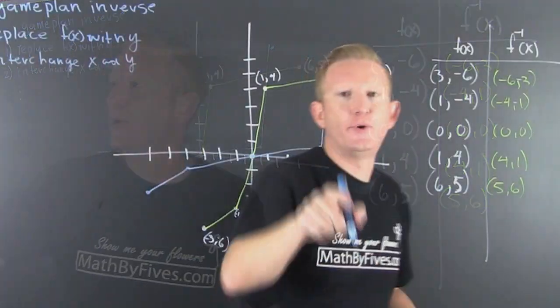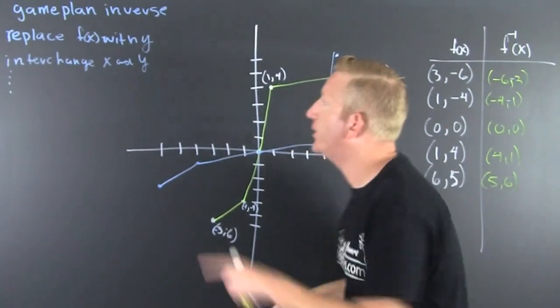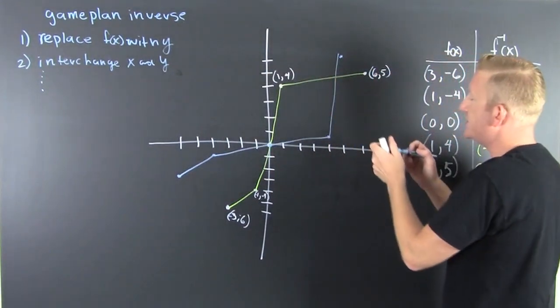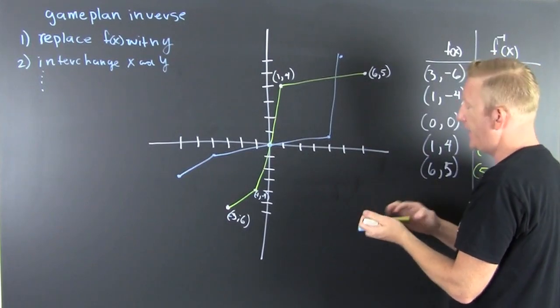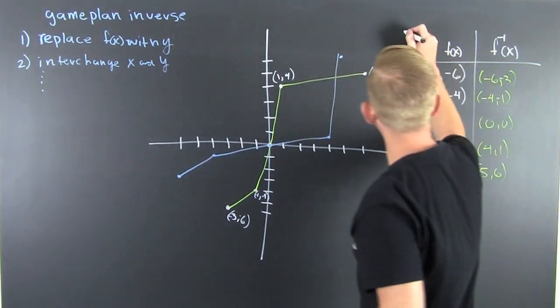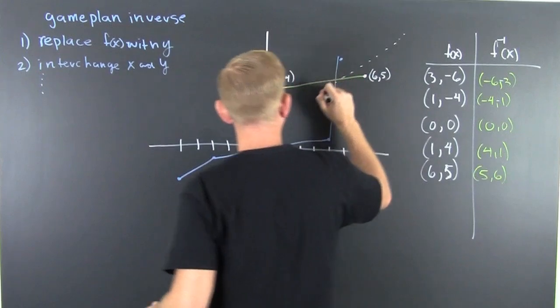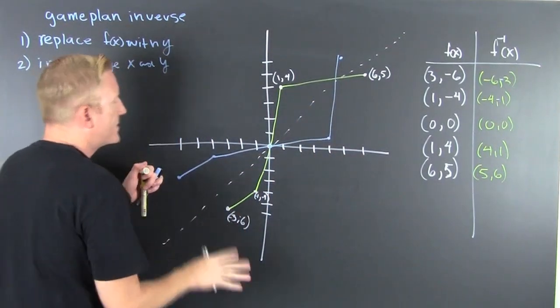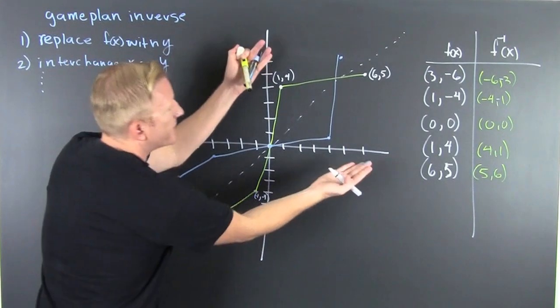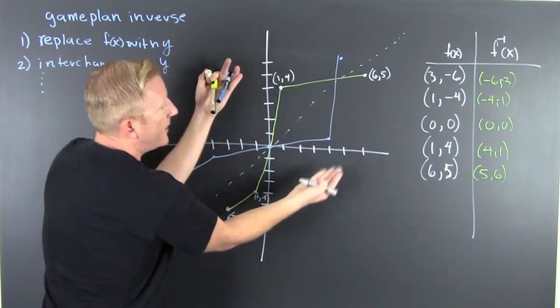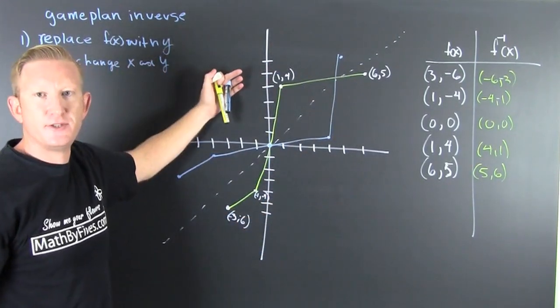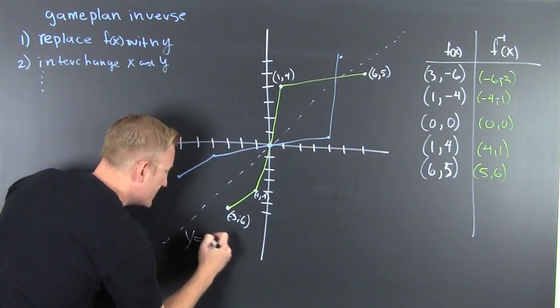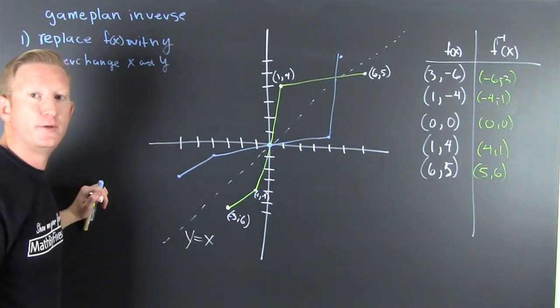What's the important part here? The important part is when I interchange my x and y, I get reflections about the line y = x. If I took that graph and I folded along that line, I would have symmetry - symmetry about the line y = x.